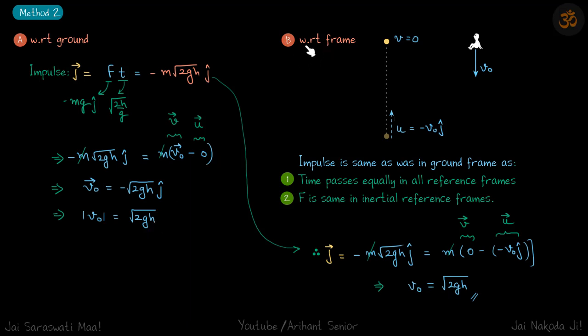Now with respect to the frame, its initial velocity, because the frame is going downwards with v₀, the initial velocity is upwards. So in vector form it can be written as -v₀ ĵ cap and final velocity is 0.